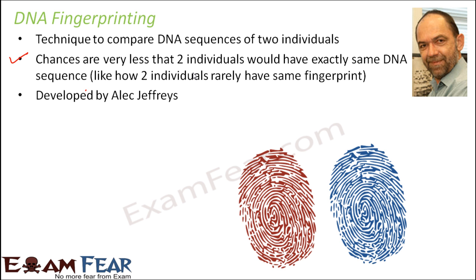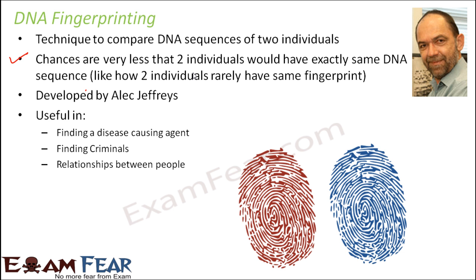DNA fingerprinting was developed by a scientist called Alec Jeffress, who worked at Leicester University in London. The technique turned out to be so useful that it gradually spread throughout the world. It is useful in finding disease-causing agents, identifying criminals, and establishing relationships — for example, in paternity cases where a couple claims a baby was exchanged, DNA fingerprinting can compare the child's DNA with the parents' to prove whether the child belongs to them.